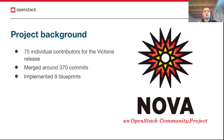Nova is the main computing project in OpenStack. It implements creating virtual servers and managing the lifecycle of those servers. In the Victoria cycle we had 75 individual contributors, we merged around 370 commits and implemented 9 blueprints. On the next slide I will highlight the main changes of the cycle.